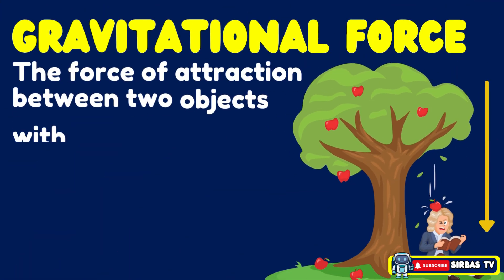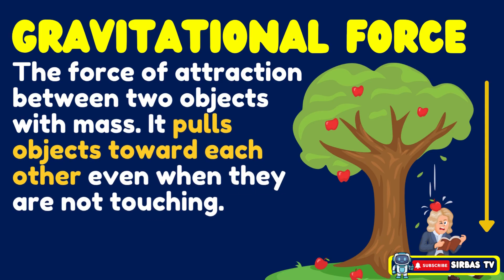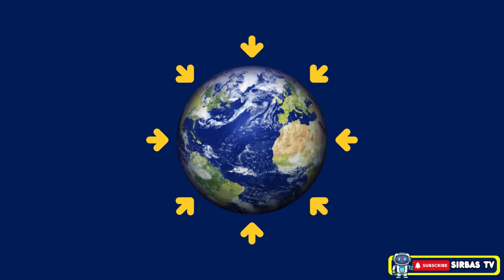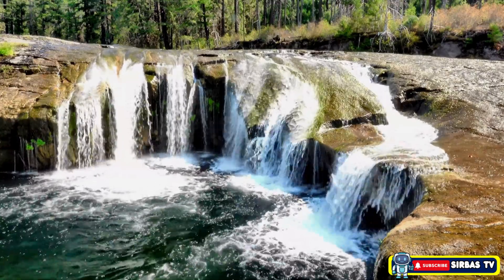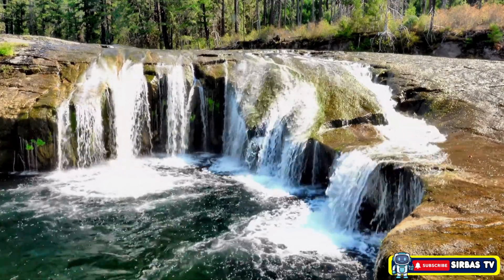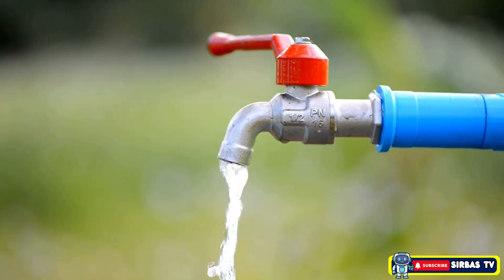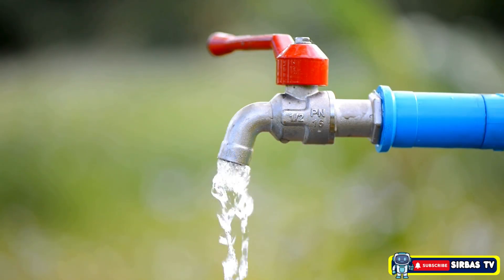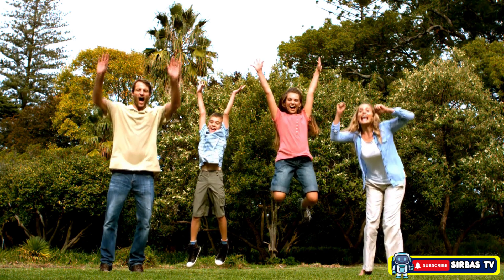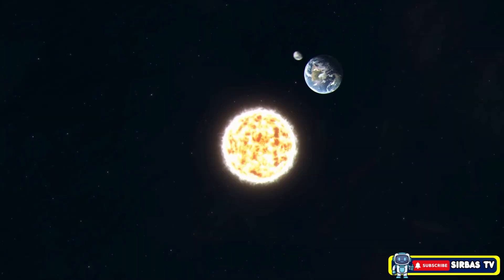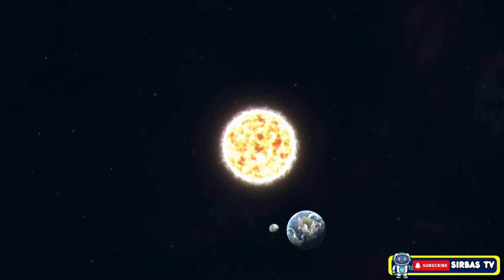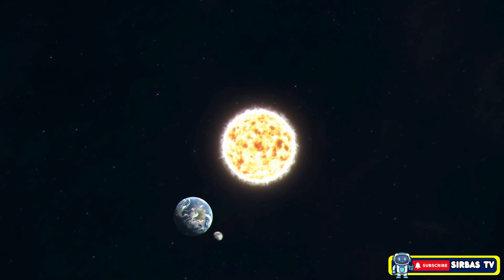Gravitational force is the force of attraction between objects with mass. It pulls objects toward each other even when they are not touching. For example, Earth's gravity pulls everything toward its center. That's why water flows downhill and falls from a faucet when you turn it on. Another example is when you jump — gravity pulls you back down to the ground. Think of how the moon stays in orbit around Earth; that's gravity keeping it in motion.